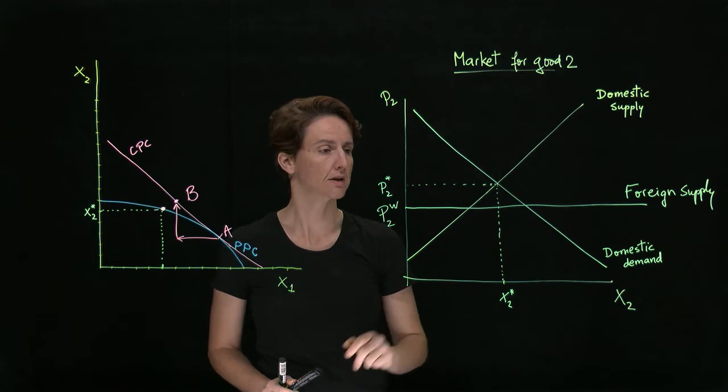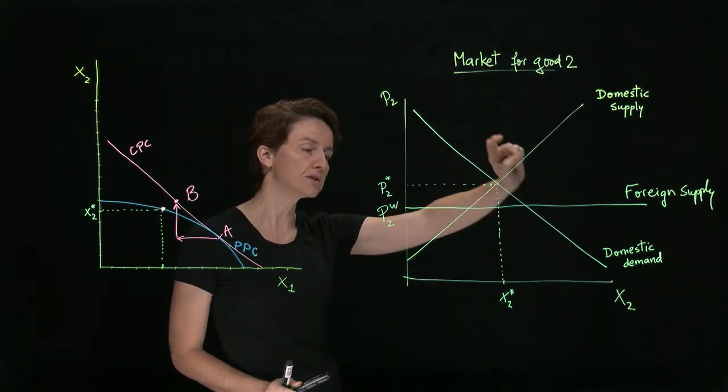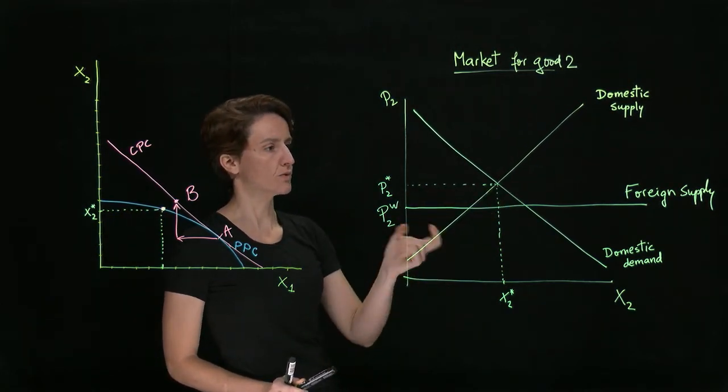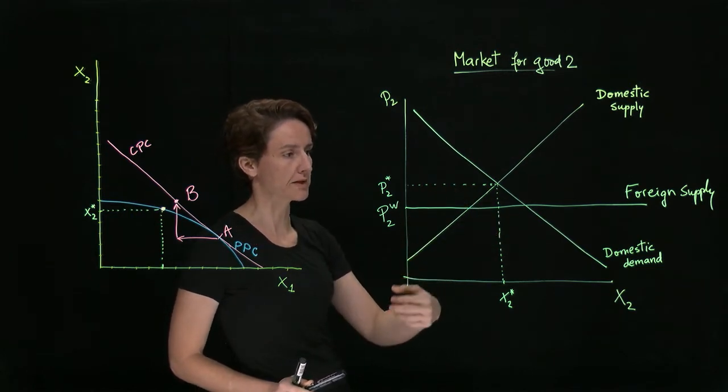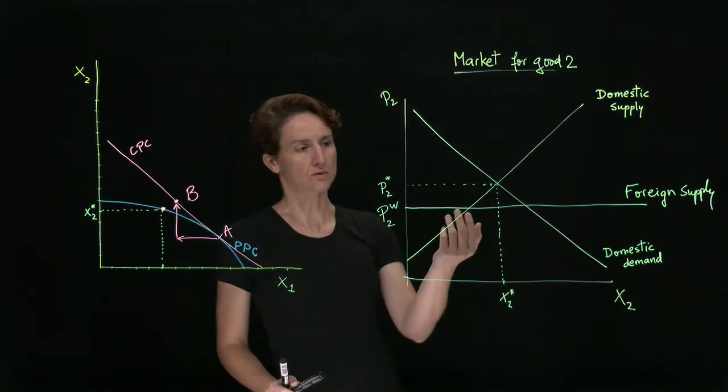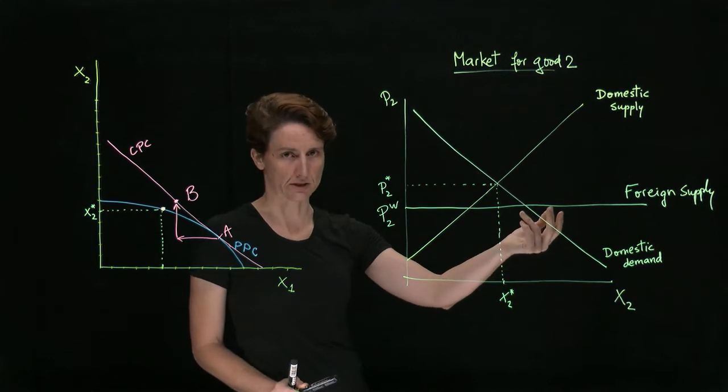So, what will happen? Now, we have two supply curves. Which one applies? Well, from the perspective of domestic consumers, they will simply want to pay the lowest price possible.